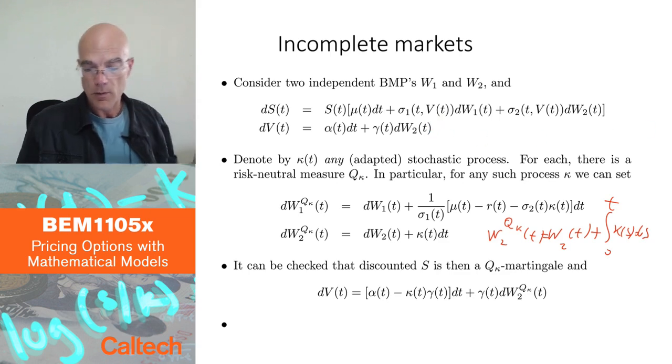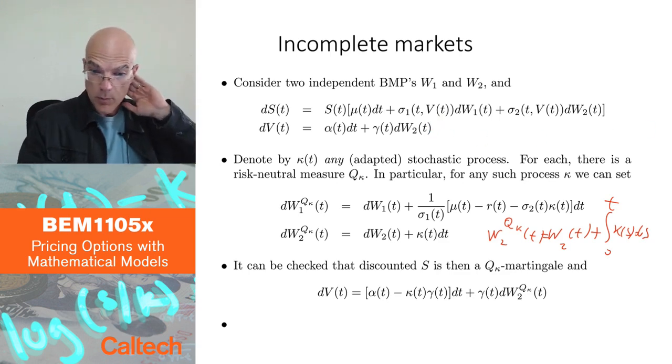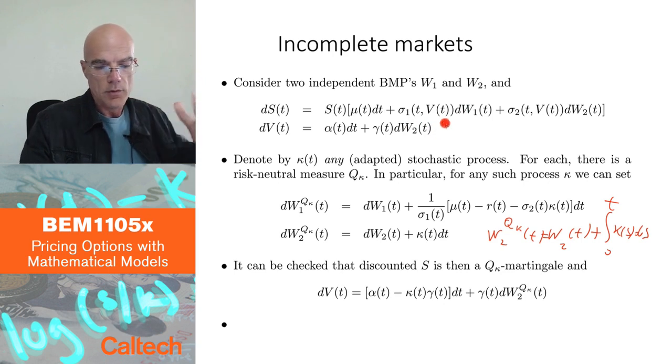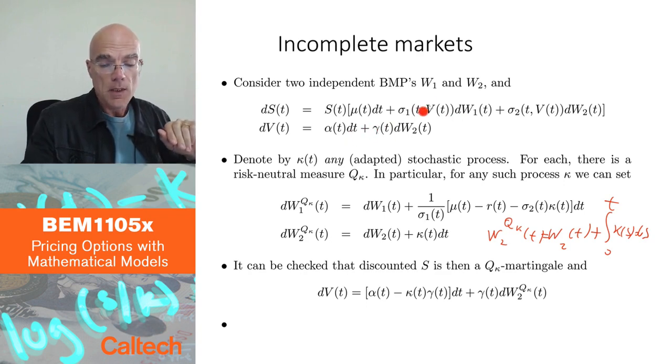This is theoretically what's going on in a model where you have two Brownian motions and only one risky asset, and you only have to make one risky asset a martingale. You are not making the other one a martingale discounted.